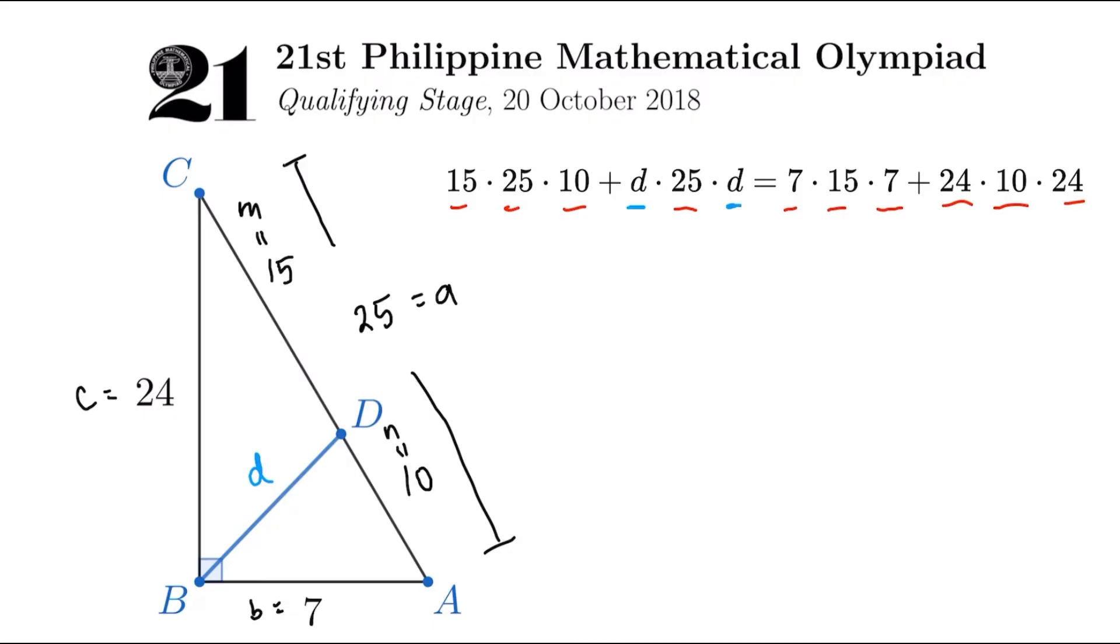Now, going back to the question, we're looking for BD squared. Now, very nice here because there are two D's here. So it's D squared already. So we just have to solve for D squared in this case. Now, the numbers are quite large, but we can make them smaller because I see a lot of terms that might factor in 5. The first factor, 15 times 5 times 10, that's going to be 750. The second, D times 5 times D, that's 5D squared. Then equal to 7 times 3 times 7, that's going to be 147, and then 24 times 2 times 24, 1,152. So we just have to solve for D squared.